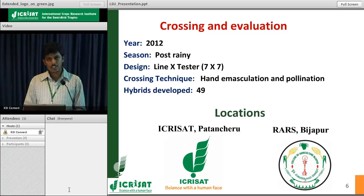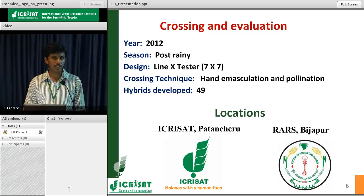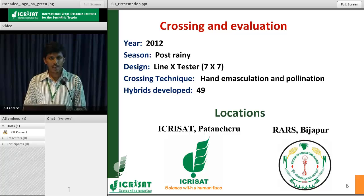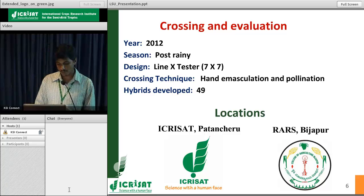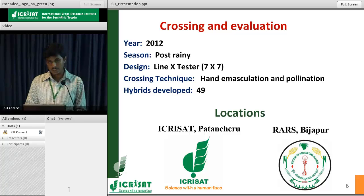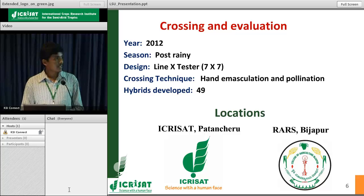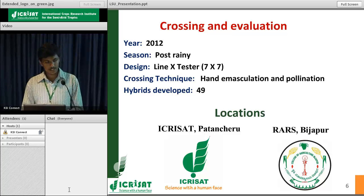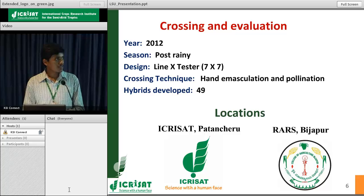The crossing technique used was emasculation and pollination. By this we developed 49 hybrids. This hybrid seed material was evaluated in 2013 in the rainy season at two locations: ICRISAT at Patanchuru and also RARS Bijapur.